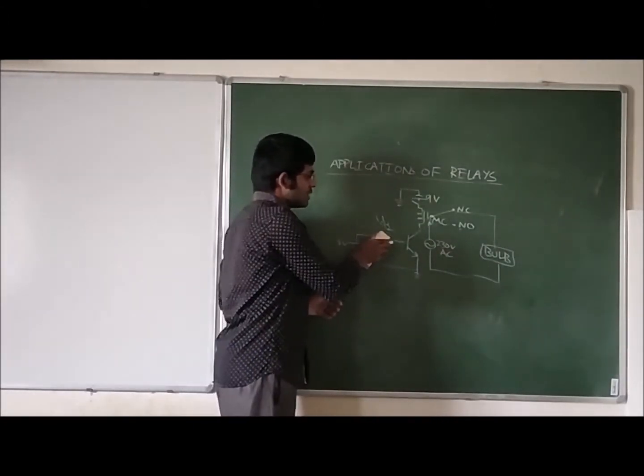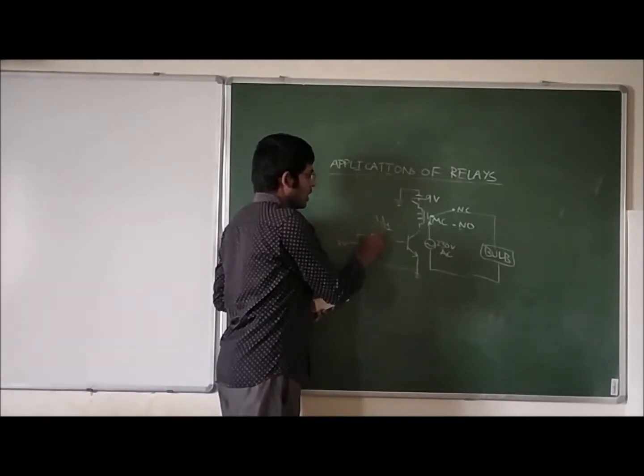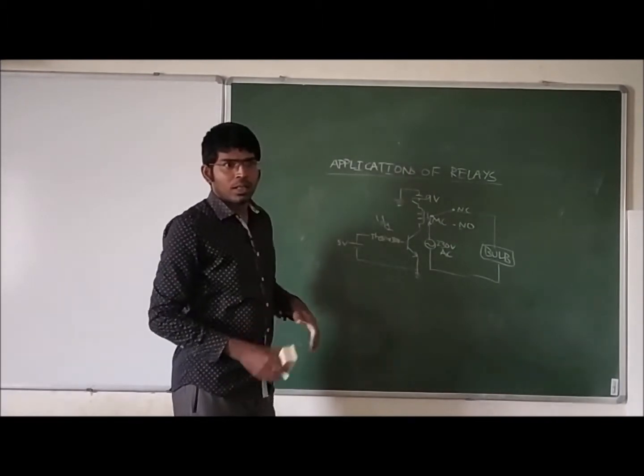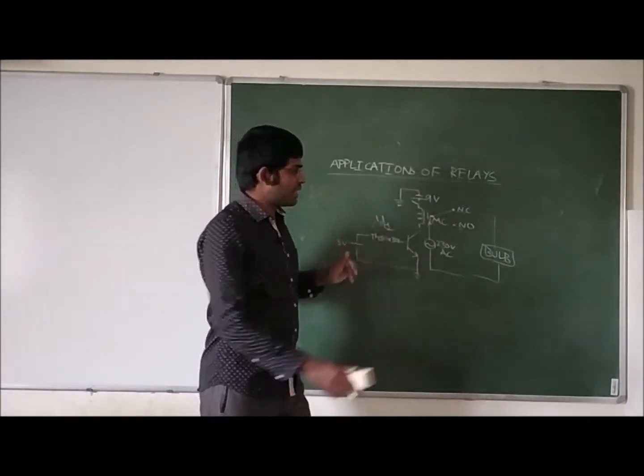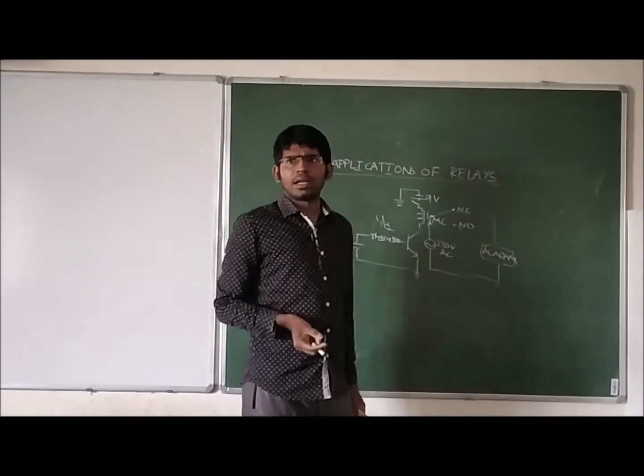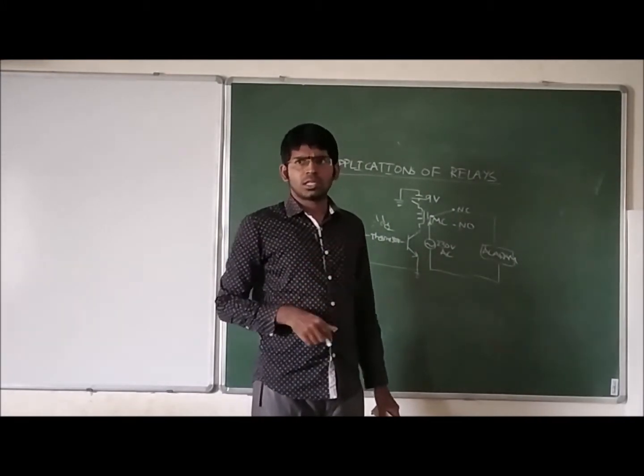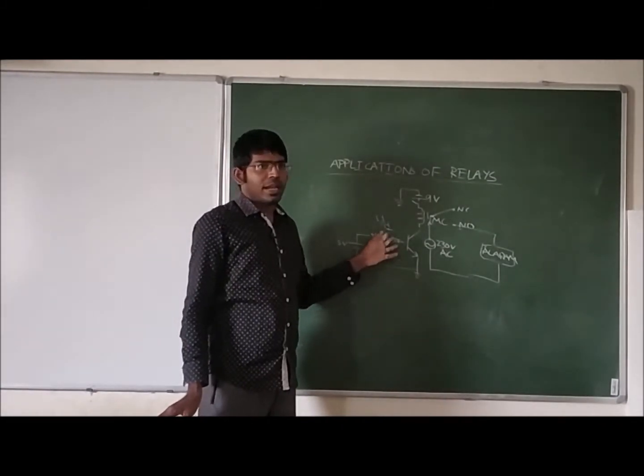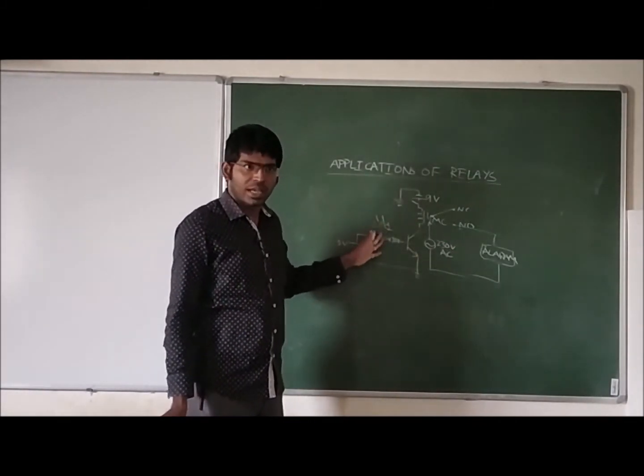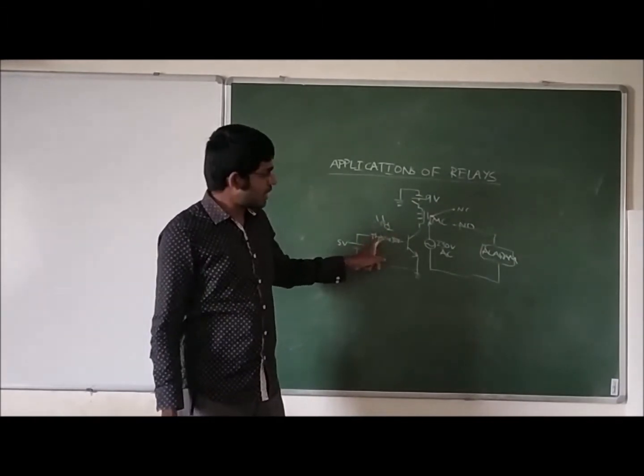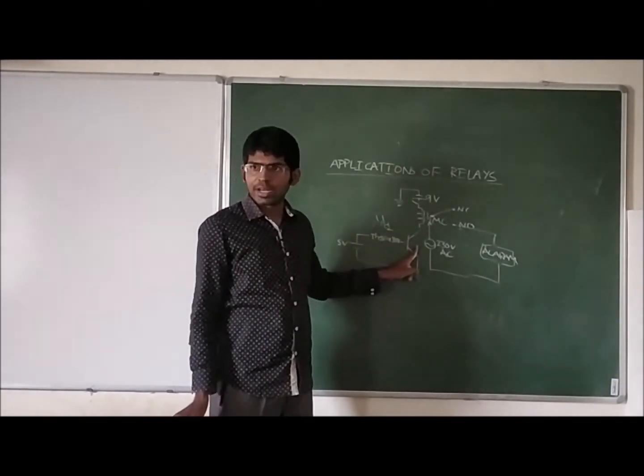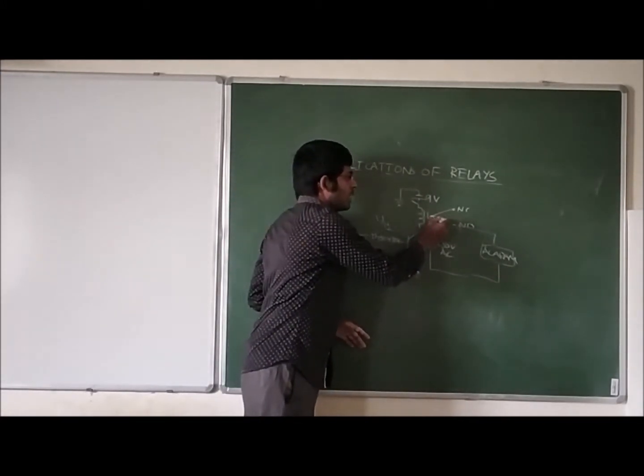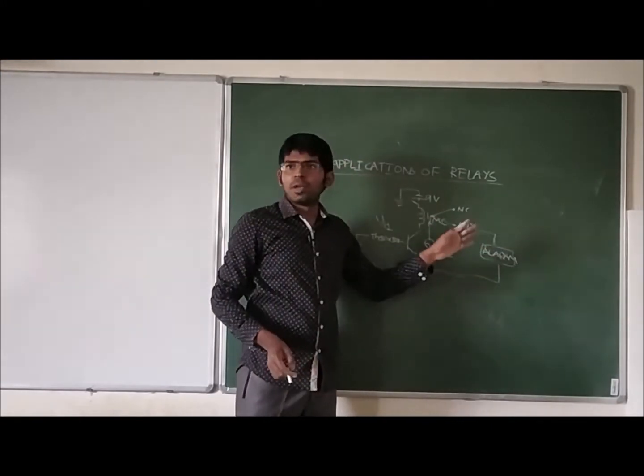If we change the resistor to thermistor, then when the temperature increases - DC buzzers are also available but now we are taking an AC alarm. When the temperature is low, the transistor will be turned off. When the temperature is high, the resistance is less. So the transistor is in on condition because the 5 volt supply is given to the transistor. There is current in the relay coil and the armature is attracted towards the normally open, and the alarm will be ringing.